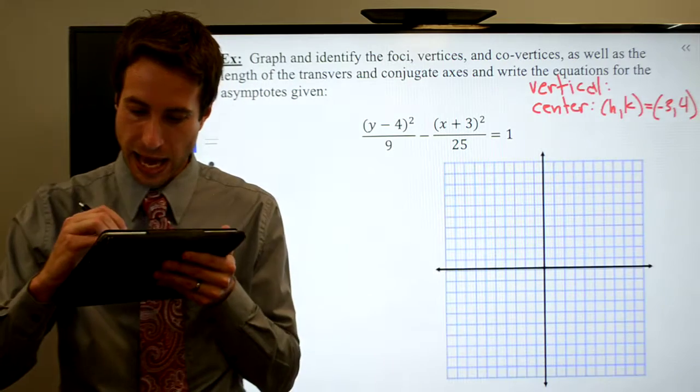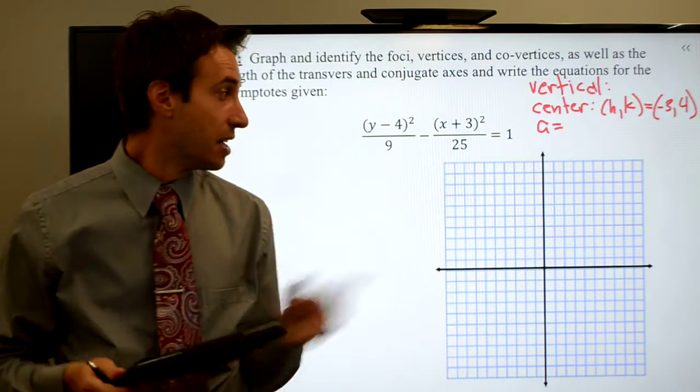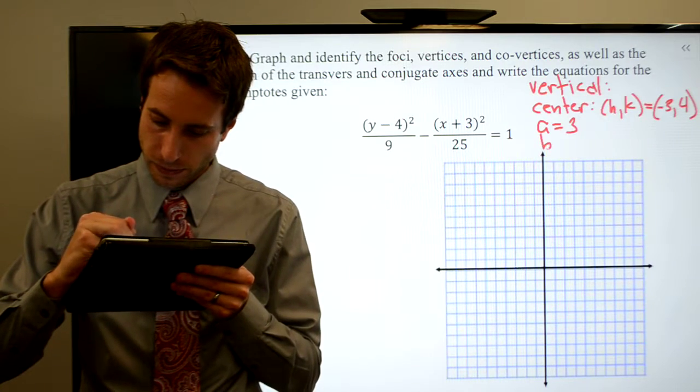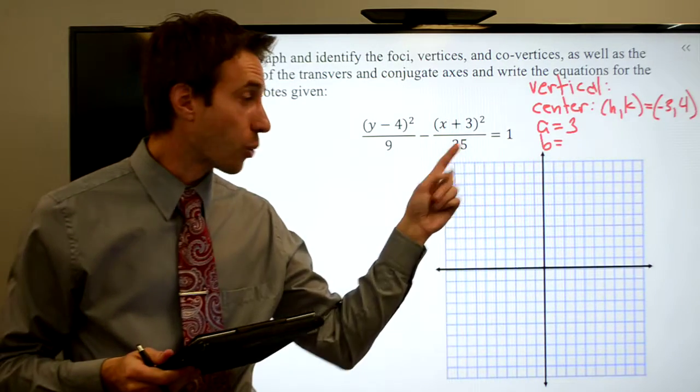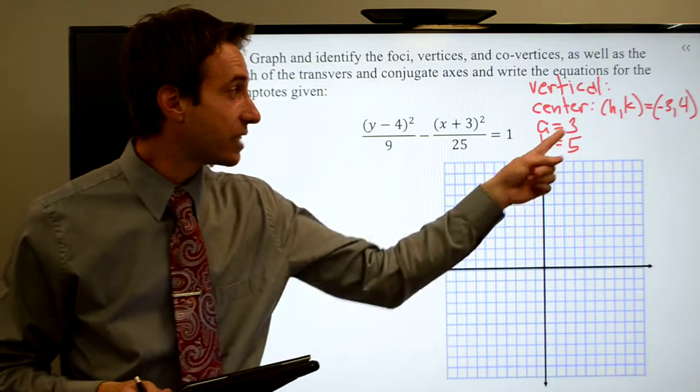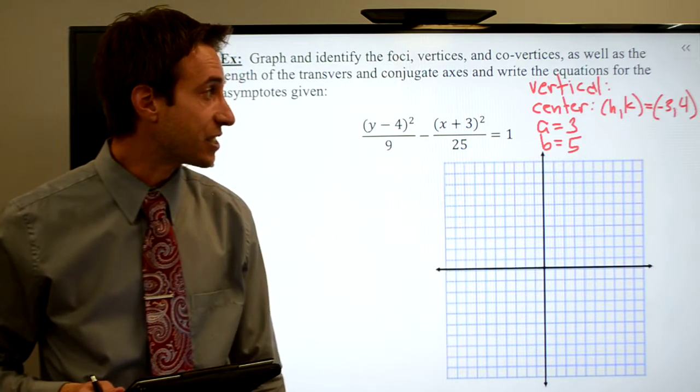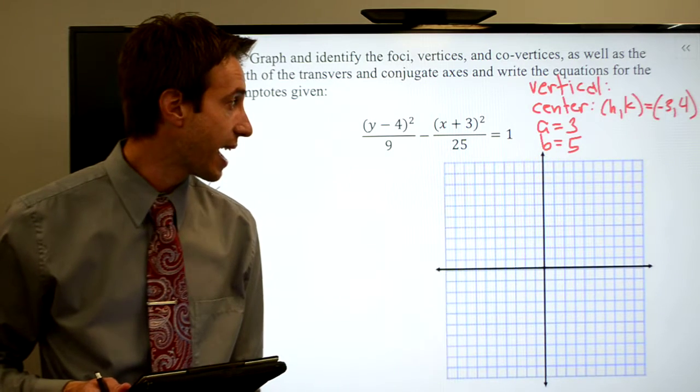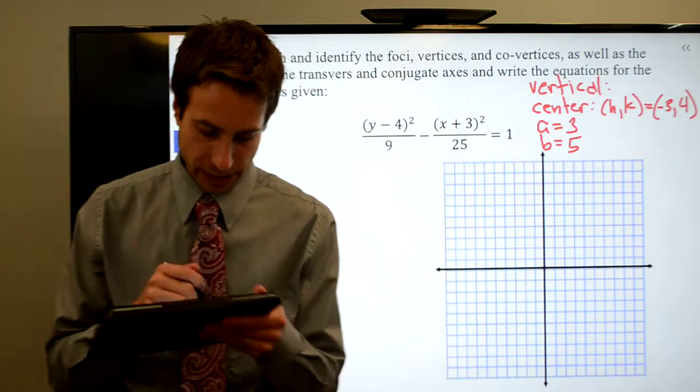and now a and b. That's a squared, take the square root. That's b squared, take the square root. So a is three and b is five. I think I've got everything I need at this point to go ahead and craft this guy.